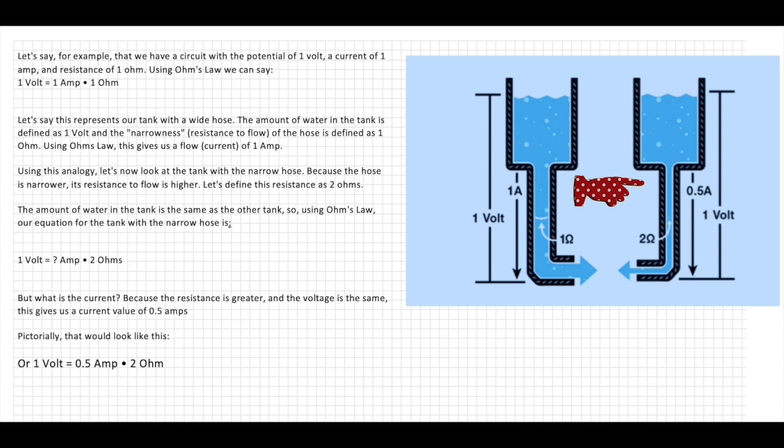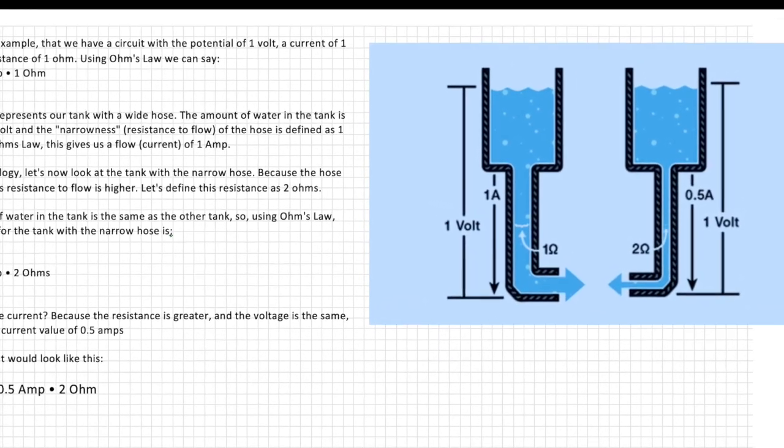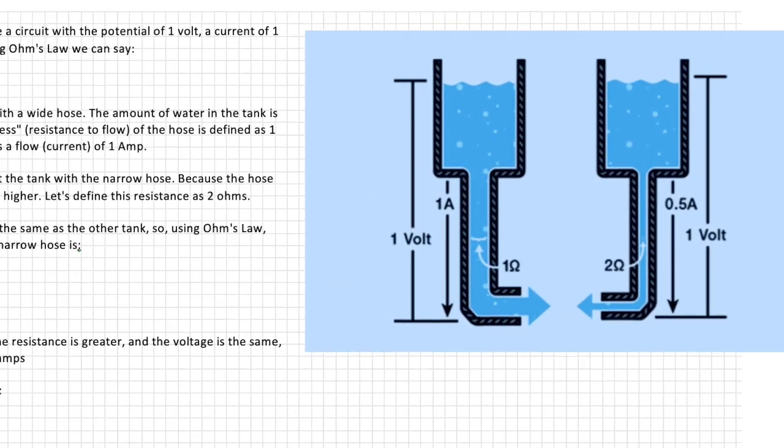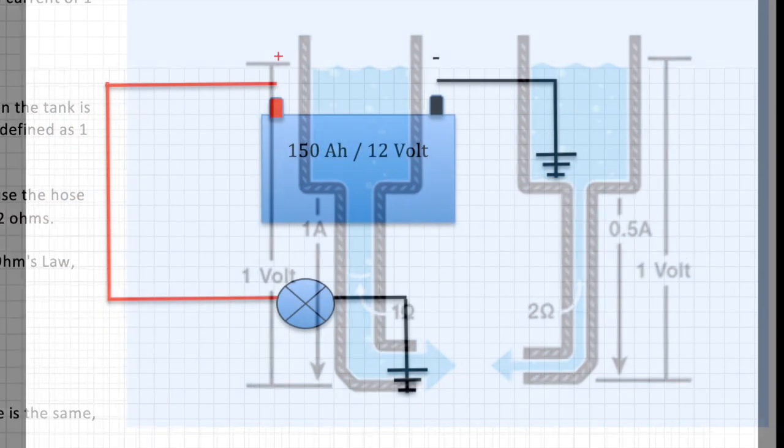Well because the resistance is greater and the voltage the same, this gives us a current value of 0.5 amps. So pictorially it looks like this. One volt equals 0.5 amps at two ohms. Hopefully a different illustration and a different explanation will make it easier to understand. Once you've mastered this and the power triangle, you're on your way to fault finding.